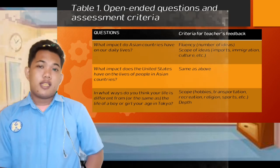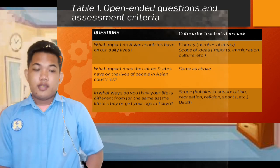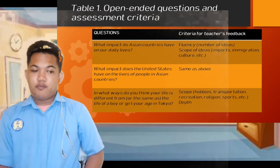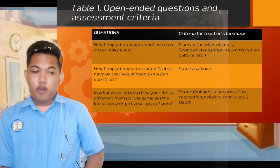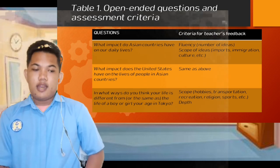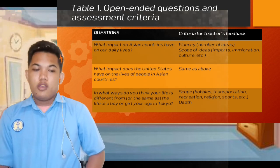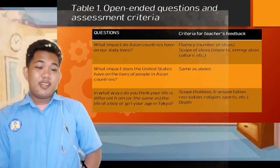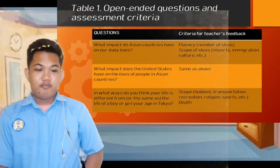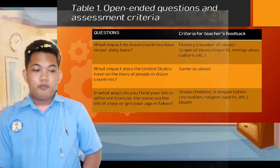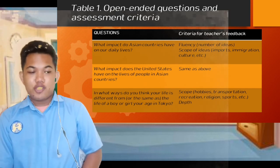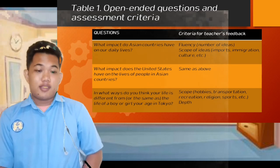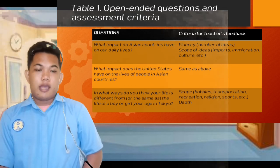The last question is: In what ways do you think your life is different from or the same as the life of a boy or girl your age in Tokyo? Under the criteria for teacher's feedback, we have scope — hobbies, transportation, recreations, religion, sports, etc. — and depth.